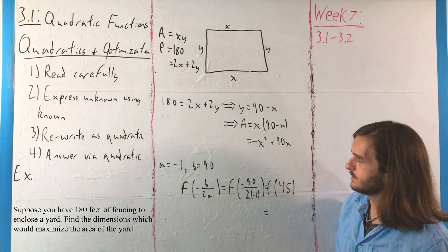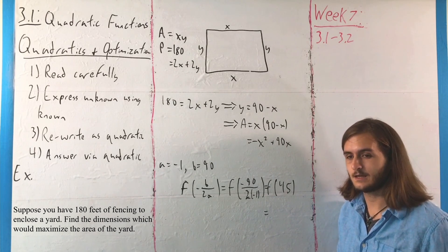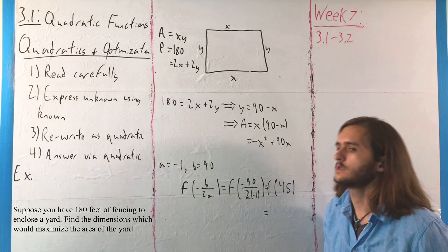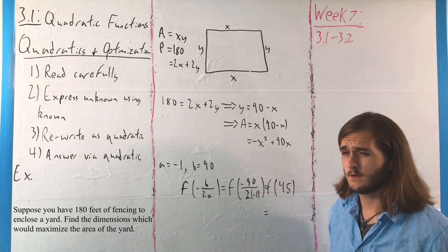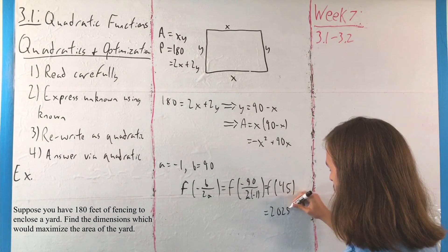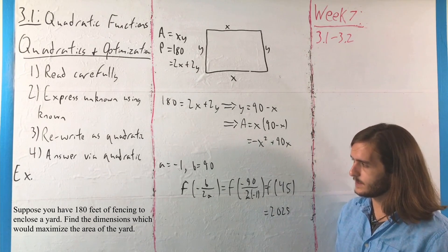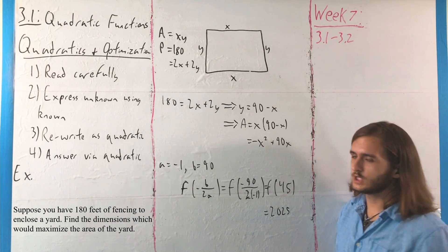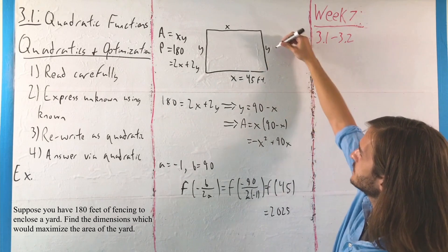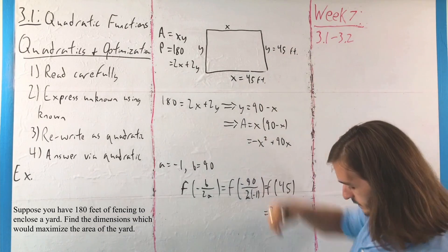So our absolute maximum is going to occur when x is equal to 45, and that maximum value plugging 45 into here will be negative 45 squared plus 90 times 45, that's going to end up being negative 2025 plus 4050 I think. But the long and short of it is, we're going to end up with a maximum area of 2,025 feet, and in order to achieve it, x is going to have to be 45 feet, and y is also going to have to be 45 feet.